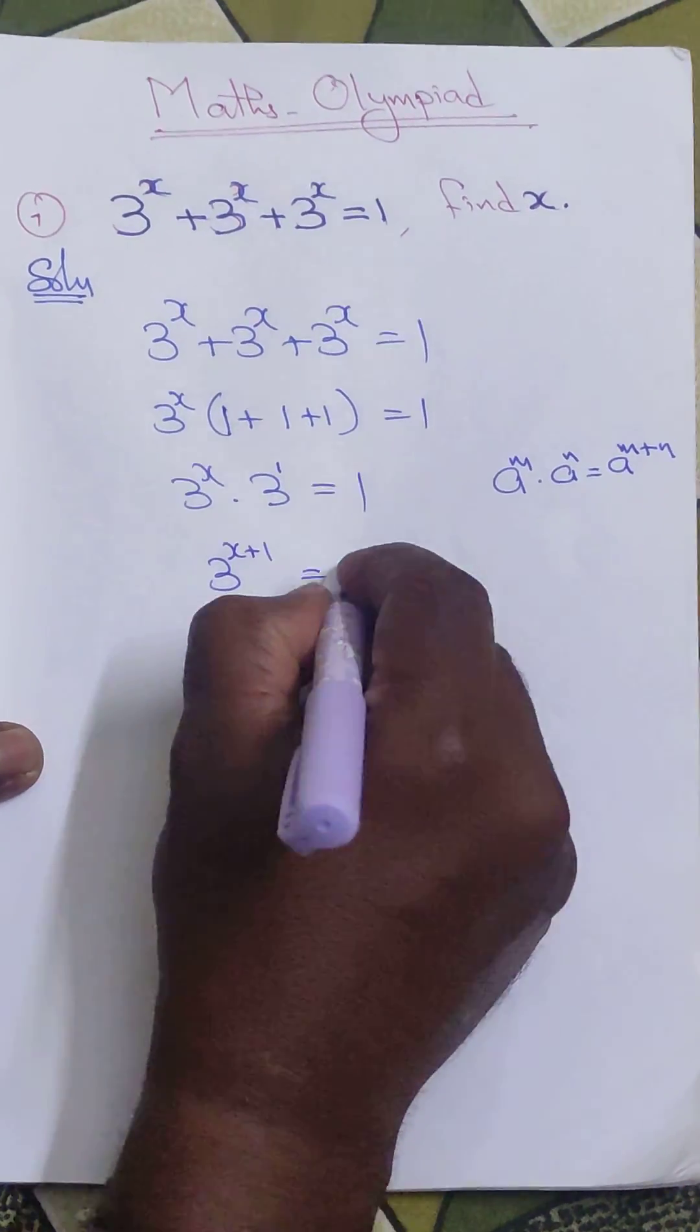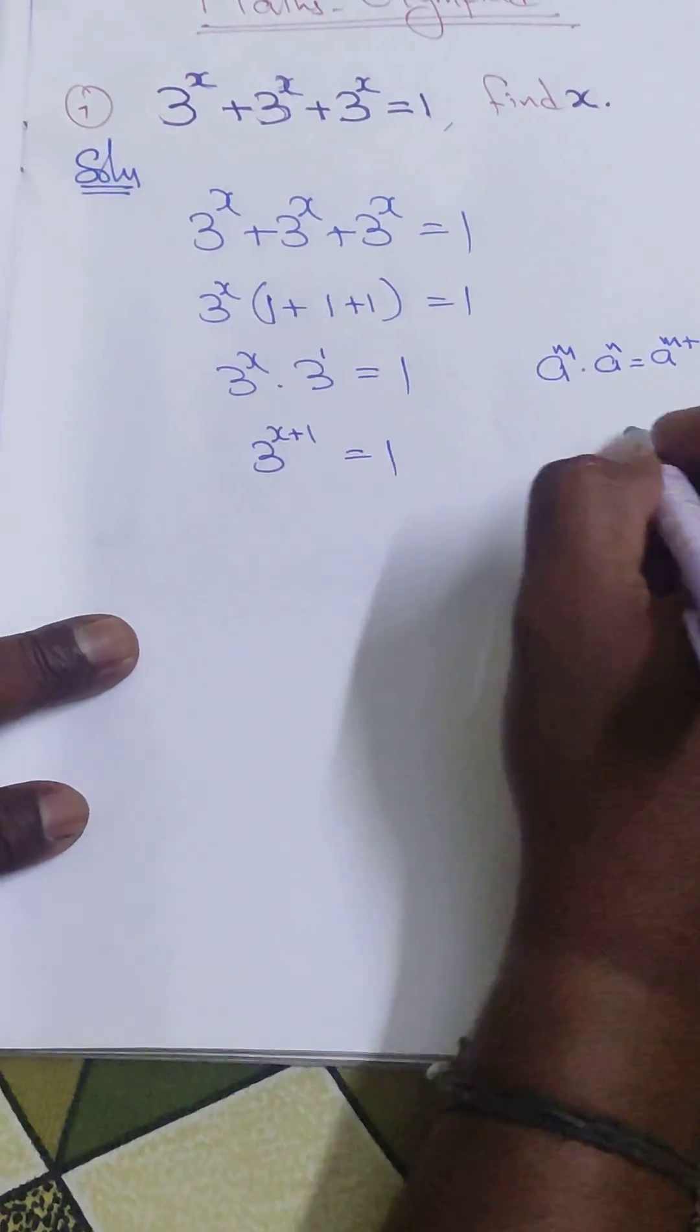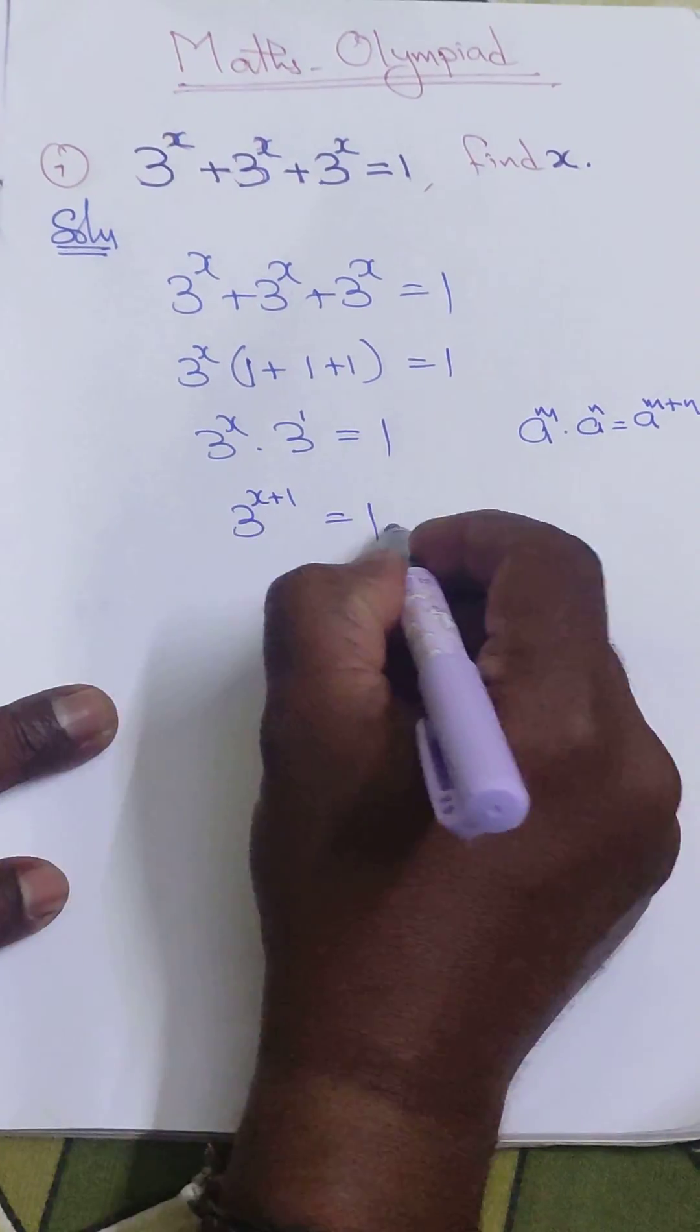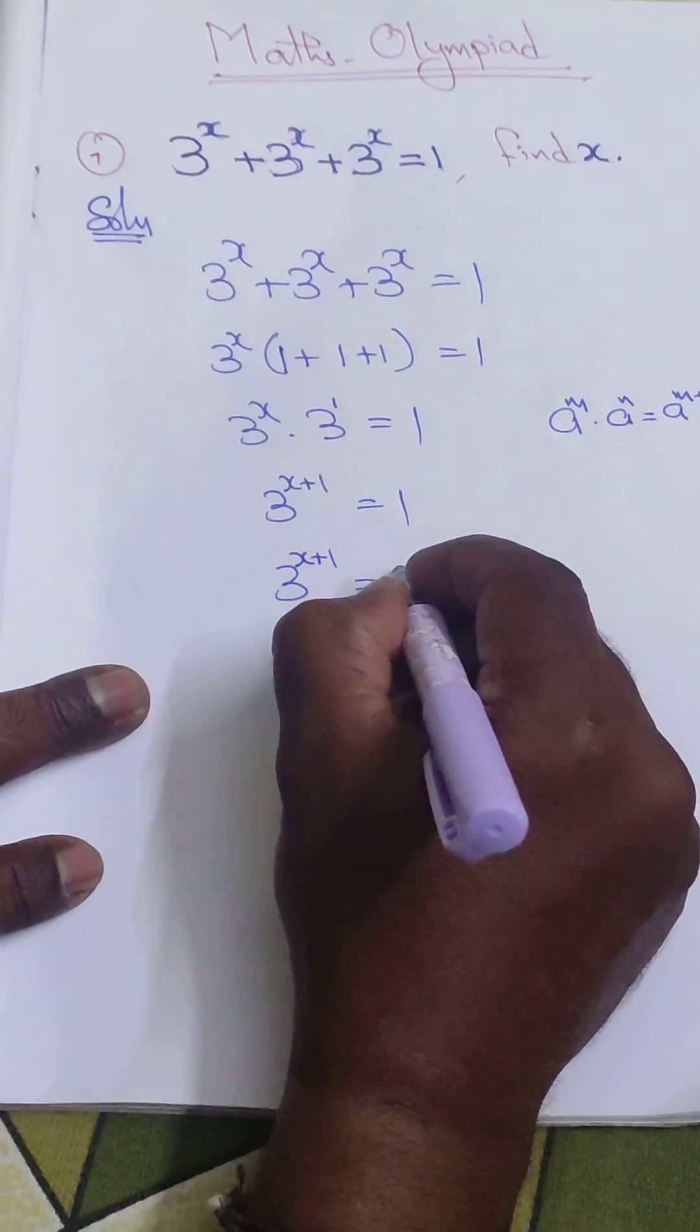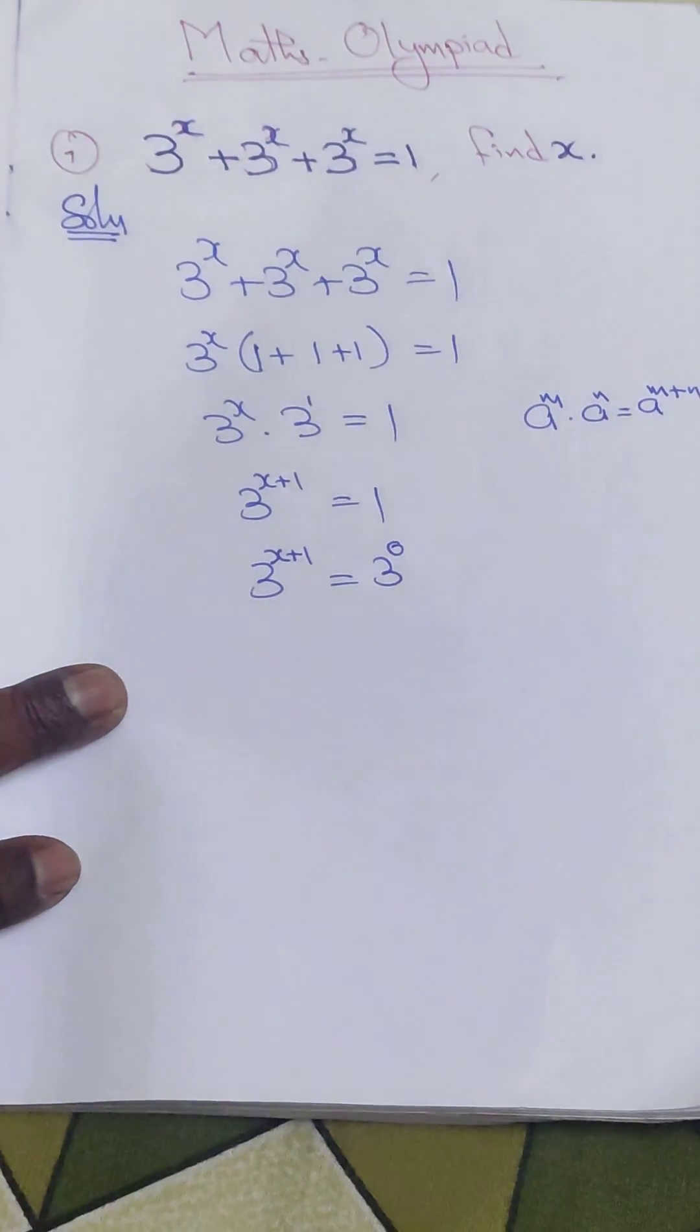Here, if the bases are equal, then we can equate the powers. We can write 3^(x+1) equal to this 1, which we can write as 3^0.